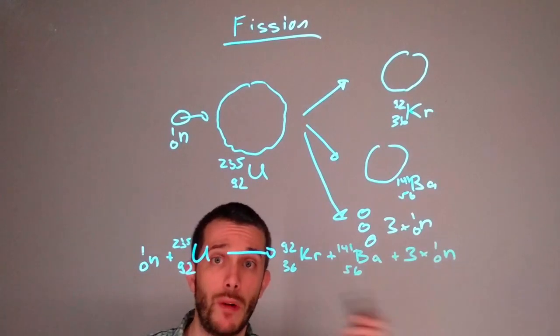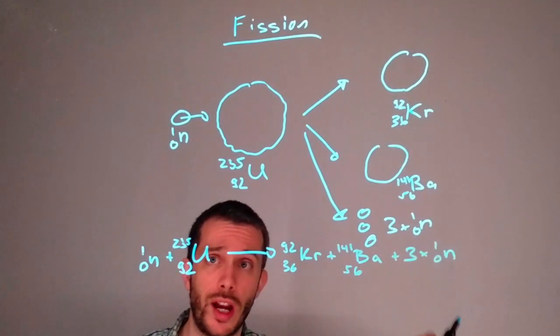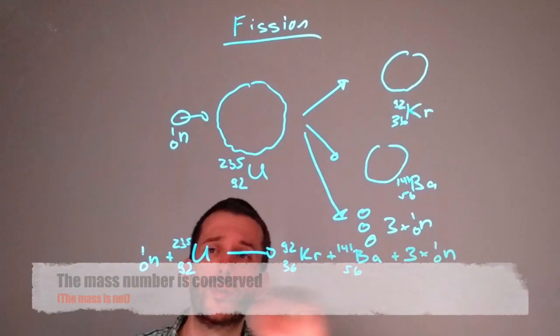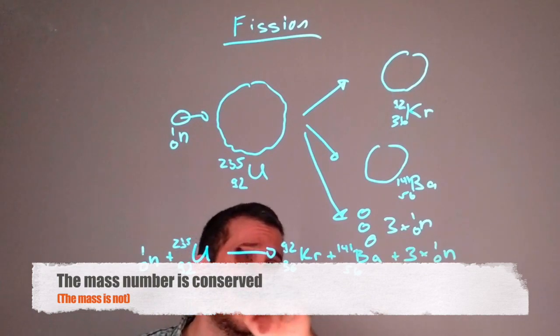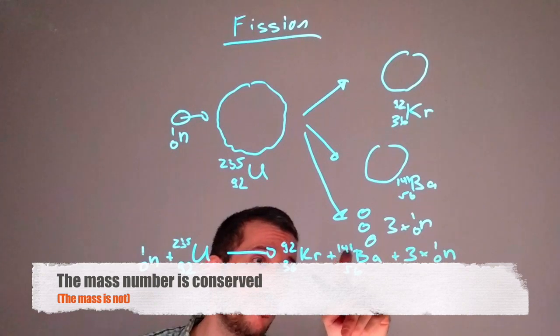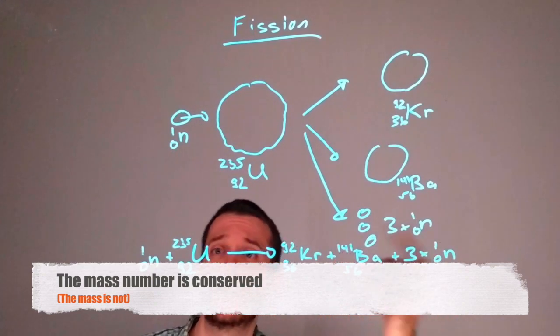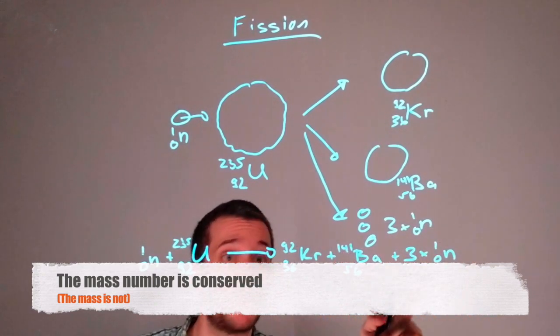Now as with all nuclear reactions, the total mass number on the top is conserved. So we have 235 plus 1 is 236. We should have 92 plus 141 plus 3 times 1 should give us the same number. This is, by the way,